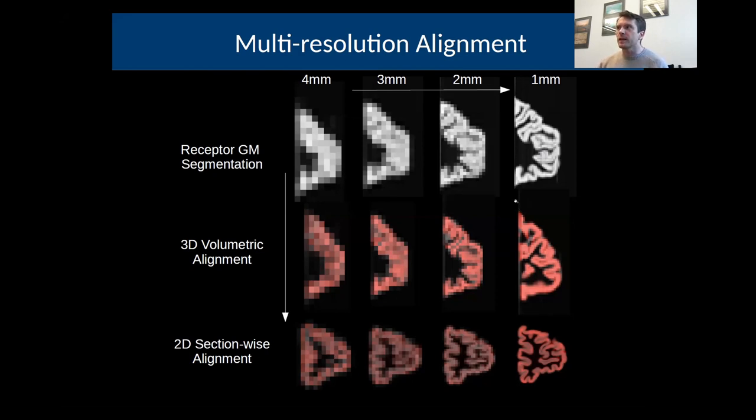What you can see is that as you go further down in resolution, you end up with a much better receptor gray matter mask, which can then be better aligned to the MRI volume, both in 3D and then better refined in 2D. Even here at one millimeter resolution, you end up with something that looks pretty good.